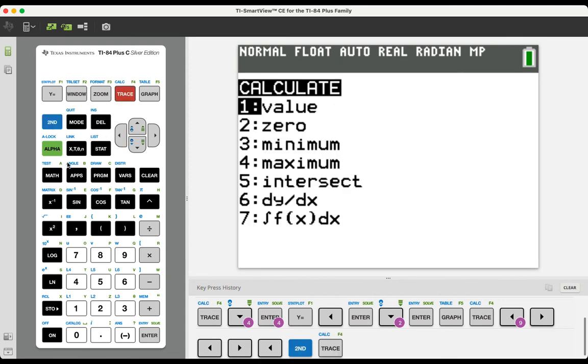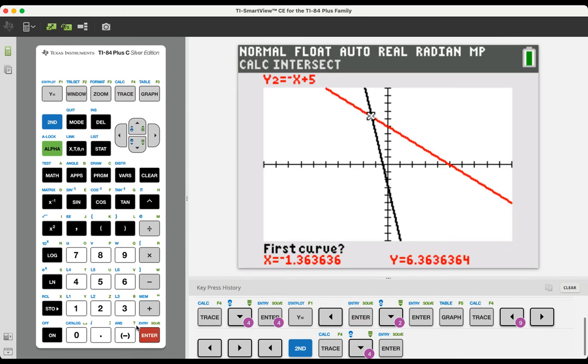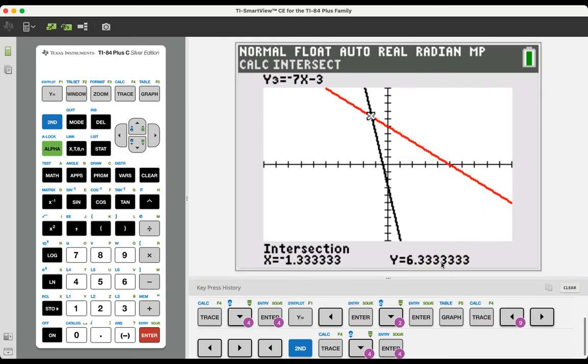We go back into the calculate menu. We arrow down to number 5 to the intersect. We press enter. We choose the first curve. We choose the second curve, and we make a guess, and there's our intersection point.